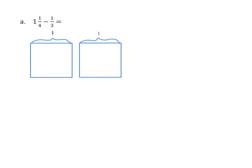Let's do another example. We have 1 and 1 fourth minus 1 third. Again, we'll leave the whole intact. We're going to partition the second rectangle into four equal parts because the denominator in our mixed number is four. We're going to bracket 1 whole and 1 fourth, making 1 and 1 fourth.